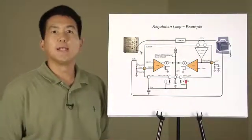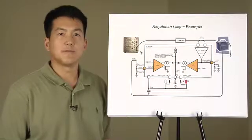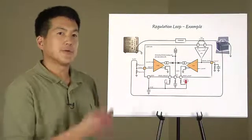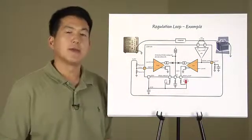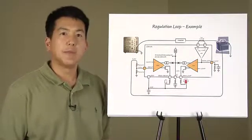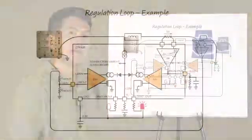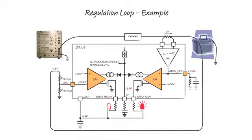Here is an example of how the regulation loops can work in a system. A power supply powers the input to the LT8705 and the output is connected to a battery.